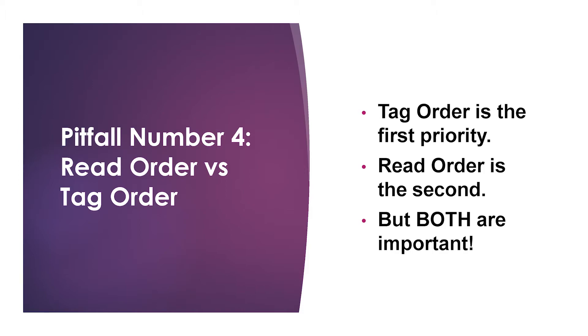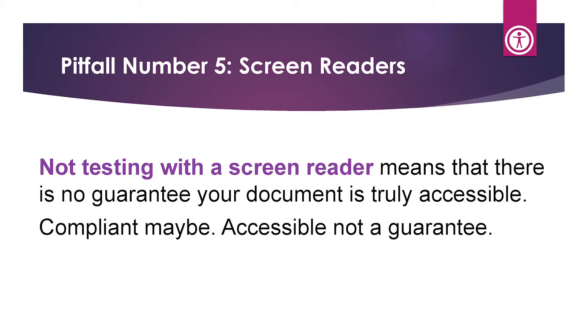Pitfall number four: read order versus tag order. Tag order is the first priority — the Web Content Accessibility Guidelines dictate that the tag order develops the primary structure for the document. But WCAG 2.1 also says your document must be able to reflow in a way that maintains reading order, so both must be managed. If you've ever tried to set both, do yourself a favor: set the read order first and then set the tag order, otherwise you'll be fighting tags back and forth.